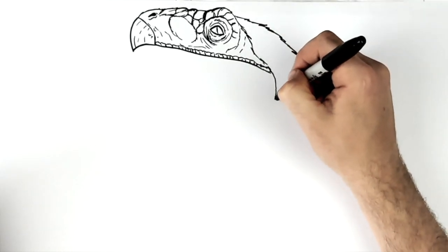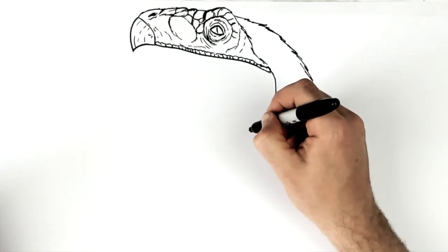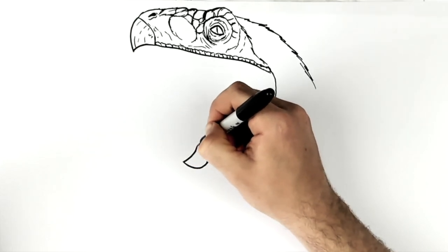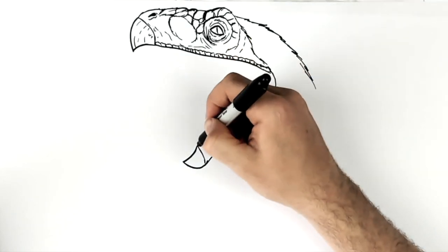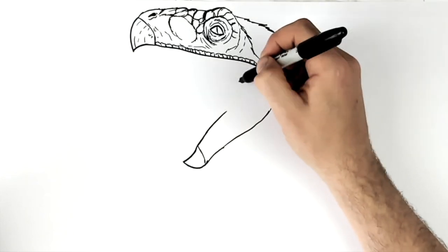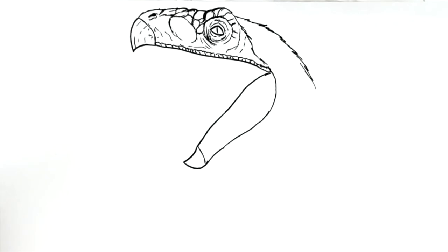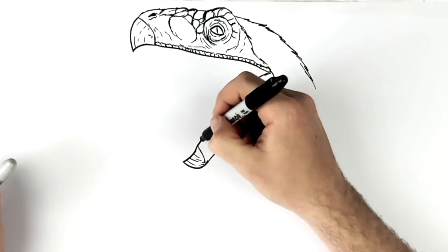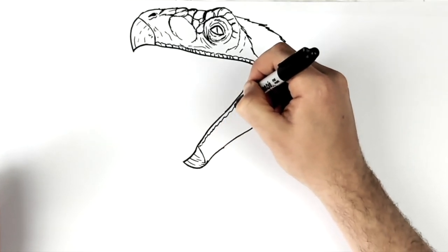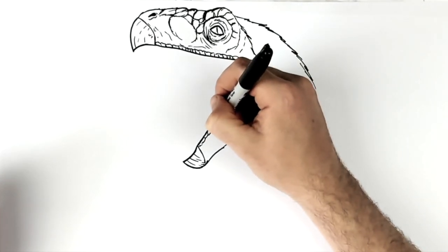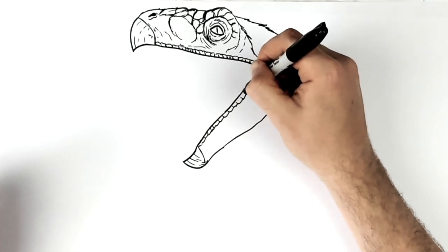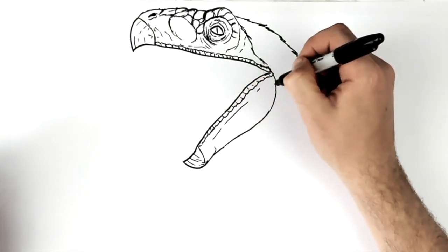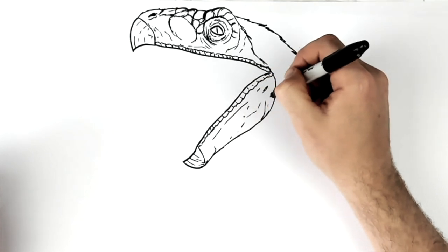And then the bottom jaw comes around like so and then comes down to another beak section down here — another sort of pointy kind of beak section. It comes down here and the top of the bottom jaw, the lip here, comes up and we'll join the edge of the mouth. Then we'll do some texture on this — we have this scaly part, most dinosaurs do on their lips, on the rim of their mouth — and then lots of wrinkles and textures on this scaly mouth there.